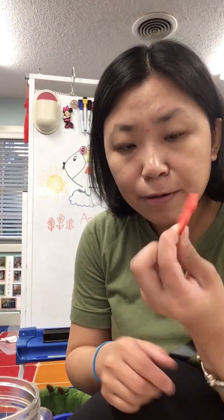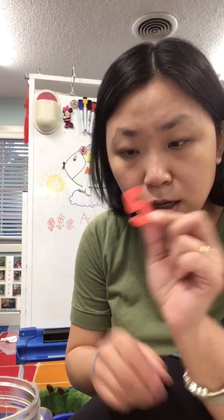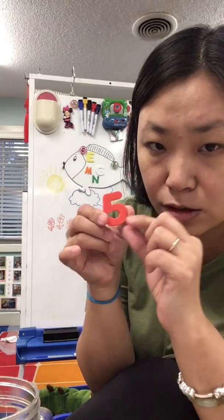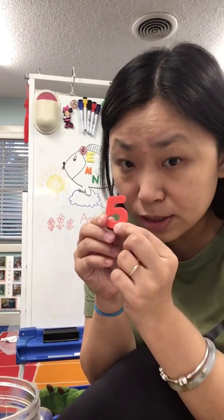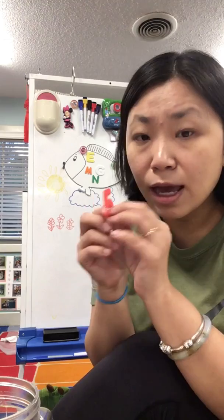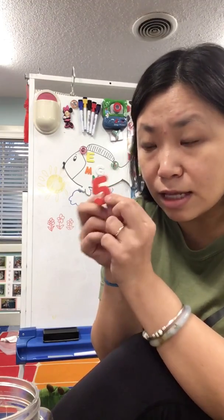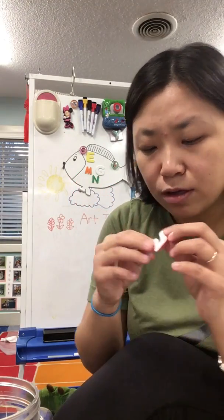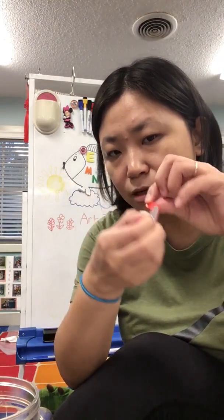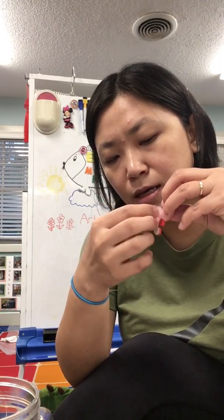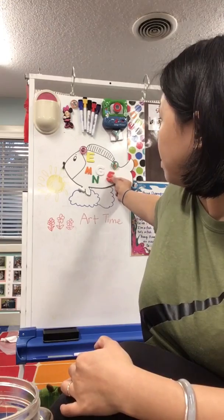Maybe some of you have number stickers. This is a number sticker — do you know what number this is? I think this is number five! So let me peel off the paper on the back and put number five on my fish.